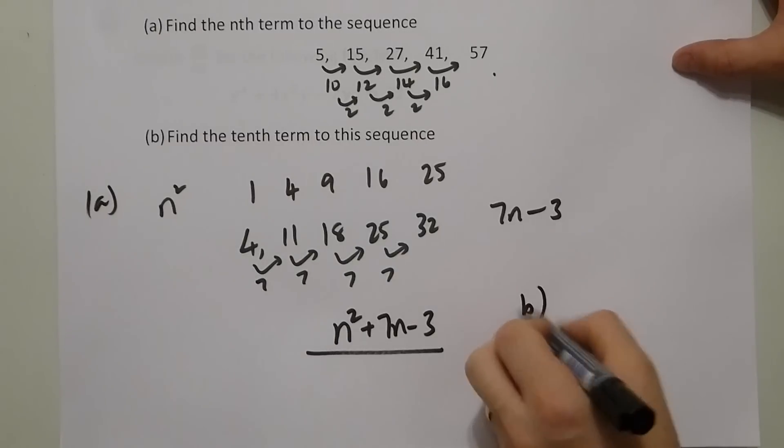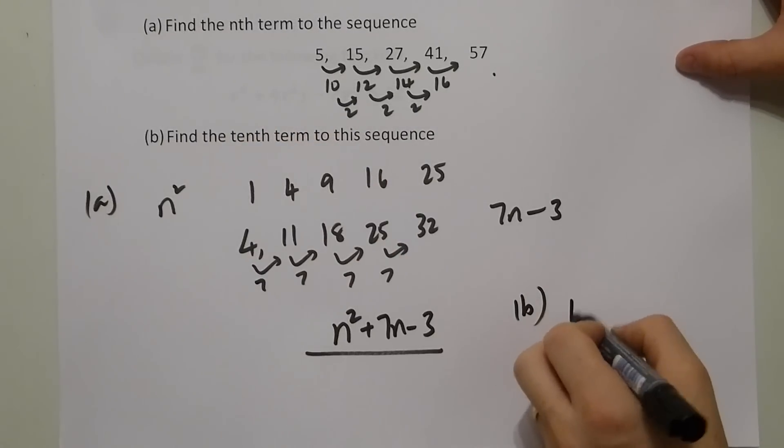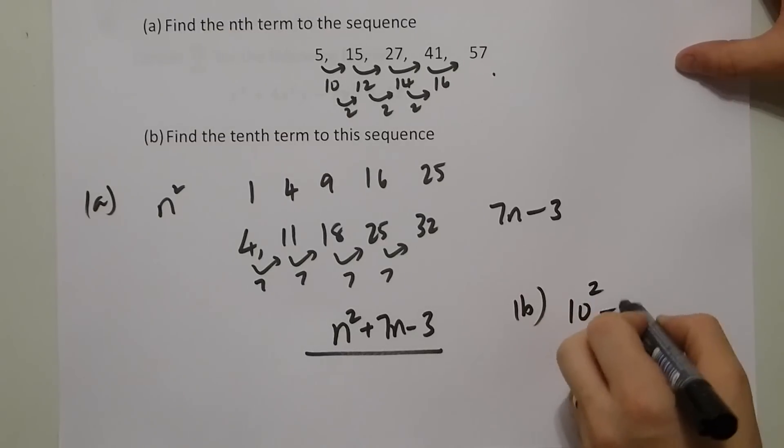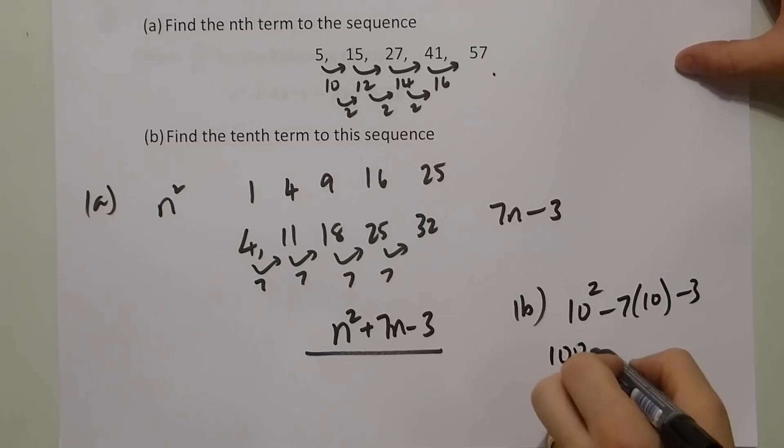In part B, you've been asked to find the tenth term. So if I replace n with a 10, we have 100, add 70, minus the 3, the tenth term would be 167.